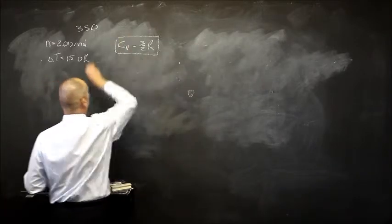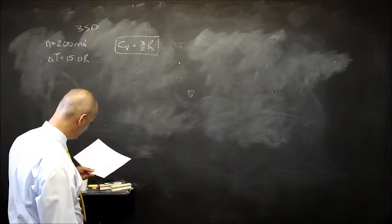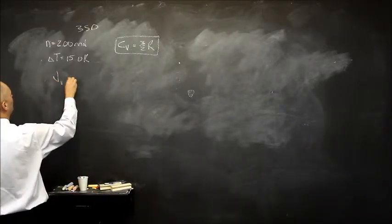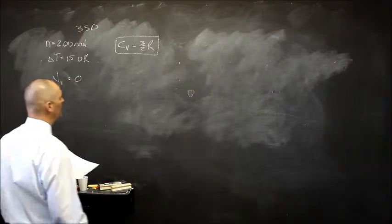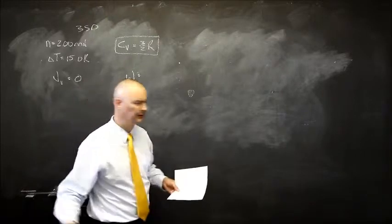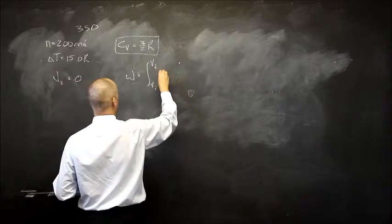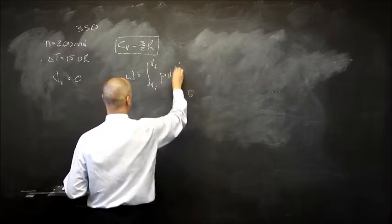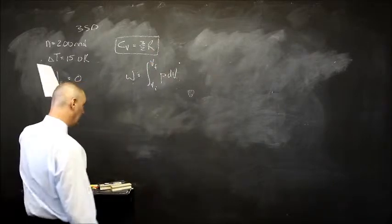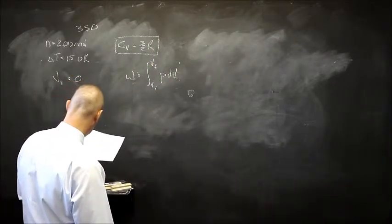What is the work done by the gas? What is the work done under constant volume? It is zero. Because remember my integral for work, it's going from some volume initial to some volume final of PdV. But here there's no change in volume, so this equals that. So my integral is just zero. There's no work done.